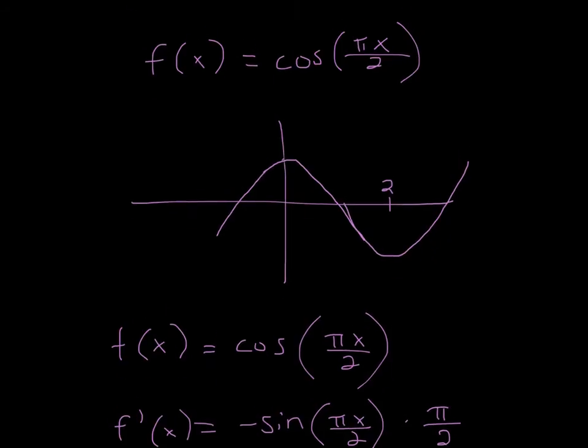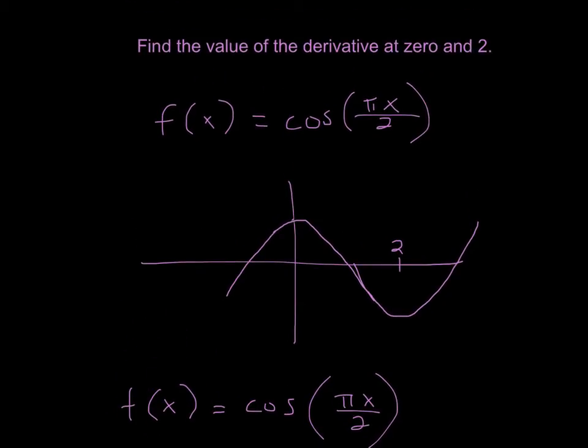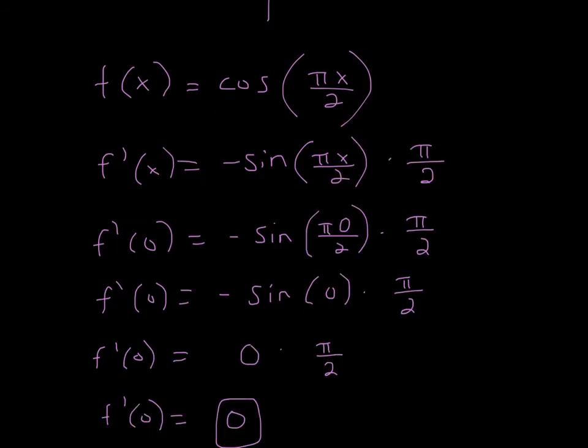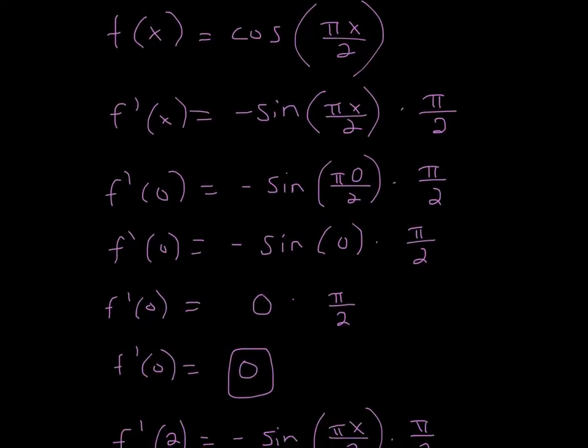So the actual question wanted you to find the derivative at 0 and 2. So we're going to plug in 0. When we plug in 0 here, 0 times anything is just 0, and 0 over a number will just be 0. So we get sine of 0 times pi over 2.